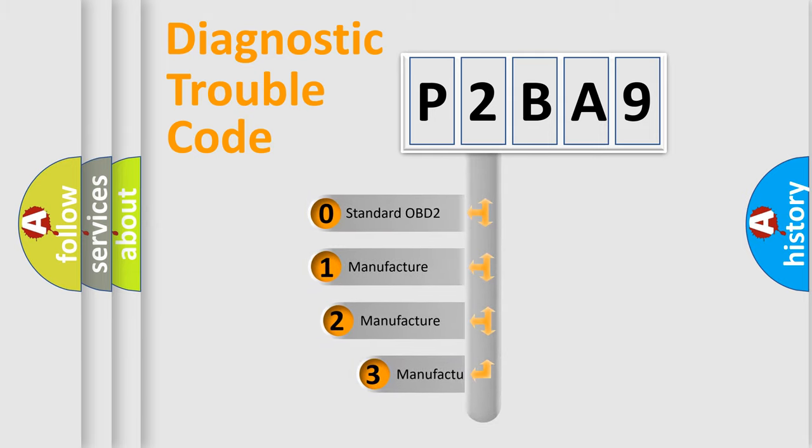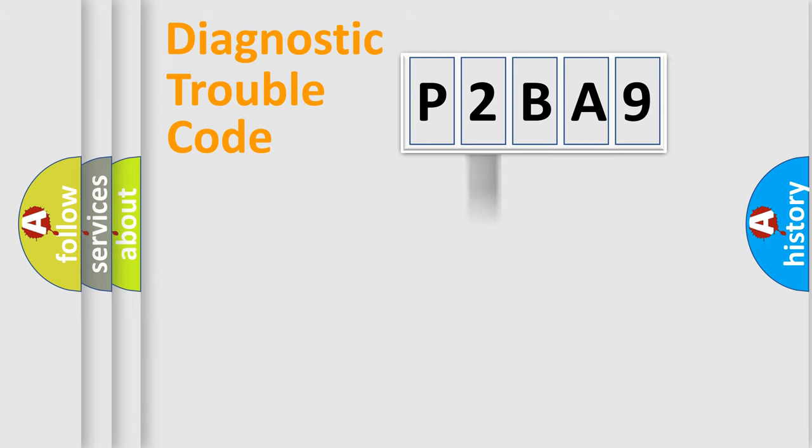If the second character is expressed as zero, it is a standardized error. In the case of numbers 1, 2, or 3, it is a manufacturer-specific expression of the car-specific error.